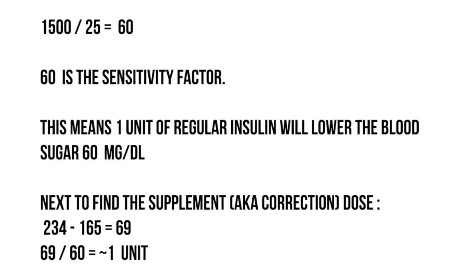You take 1500 and divide it by 25, which equals 60. This is the sensitivity factor. So this means that one unit of regular insulin will lower the blood sugar by 60 mg/dL.